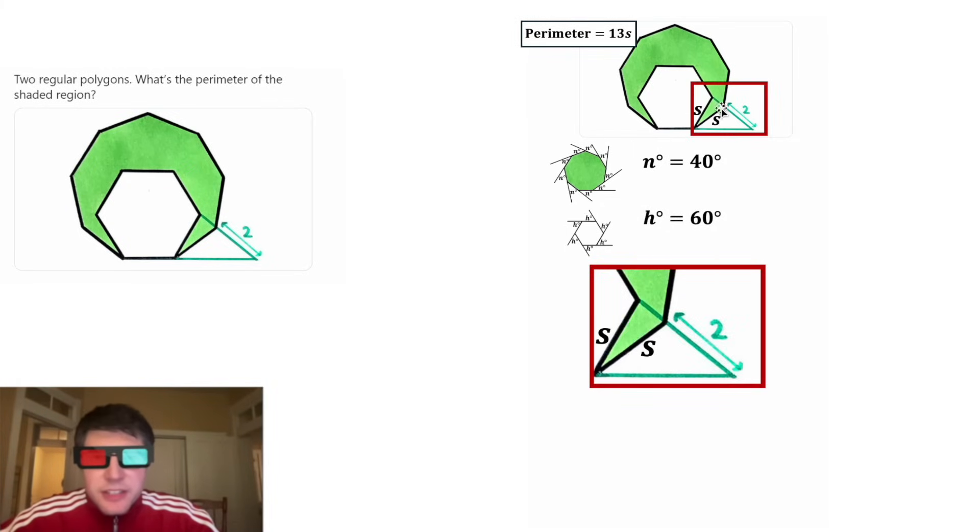This angle right here, that's this right here, that is the external angle of the nonagon. So we'll call that 40 degrees. And then this larger angle, that's this whole thing, which is the external angle of the hexagon, and that'll be equal to 60 degrees.